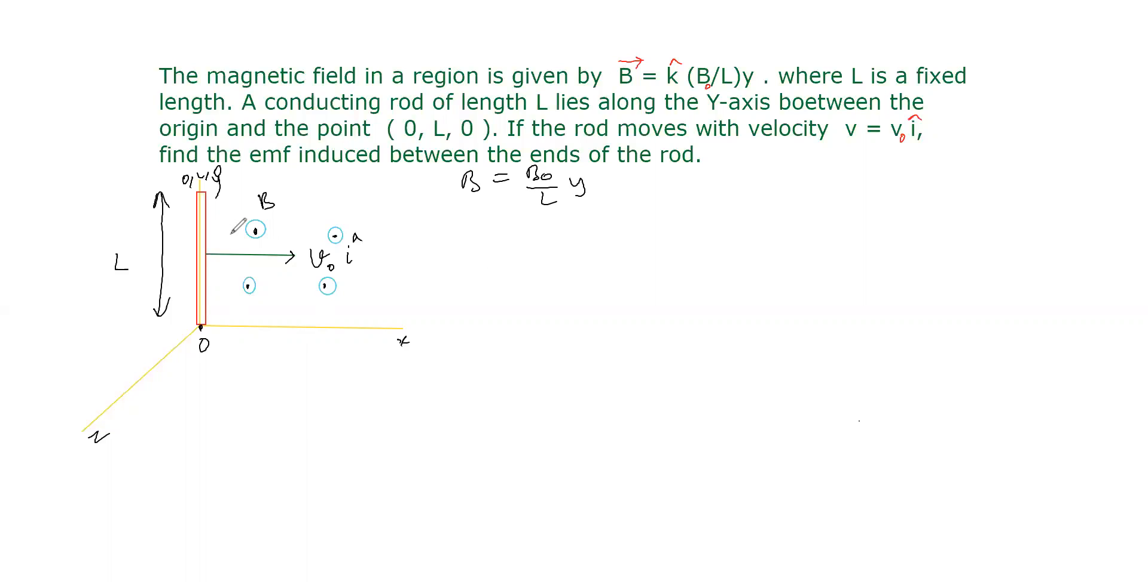Now see here, this is the rod we take. In this rod, we take a small part dy. We assume at this point a dy part in this place. In this dy part, the EMF induced is dE.